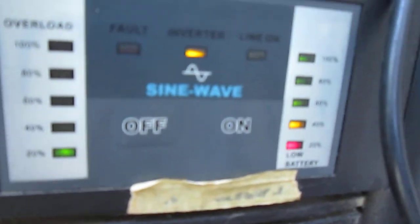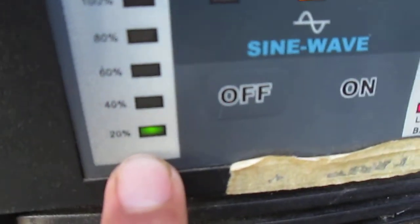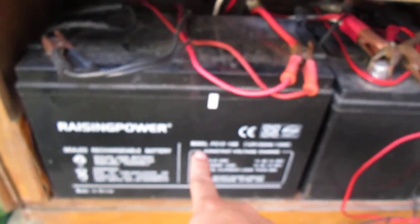You could hear the sound and then that is the off-grid inverter. The water pump is only consuming at 20% and that is the battery, a deep cycle battery.